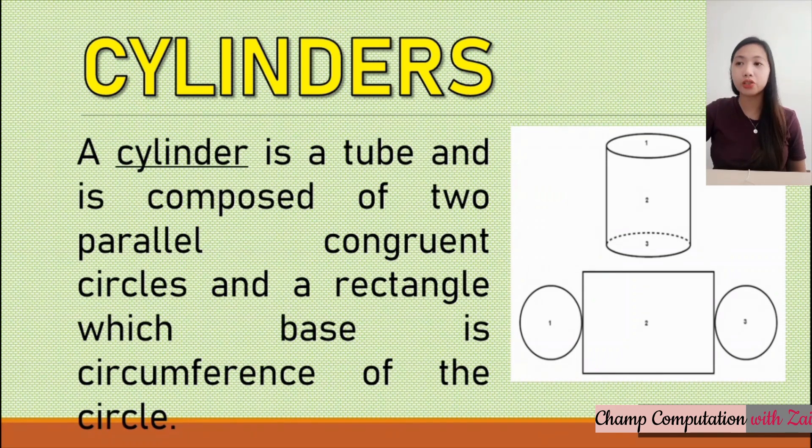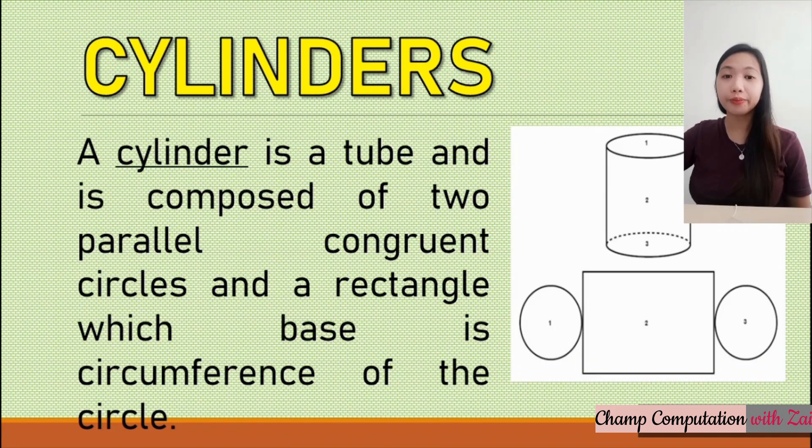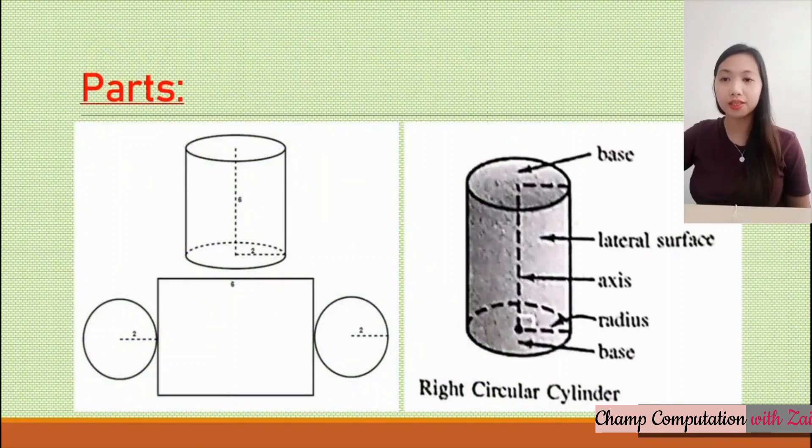A cylinder is a tube and is composed of two parallel congruent circles and a rectangle which base is the circumference of the circle. These are the parts of a cylinder. We have the base, the lateral face, the axis, the radius, and the lower base. The bases are the upper and the lower bases, just like the prism. But in cylinders, the bases are only circles and the lateral surface is a rectangle.